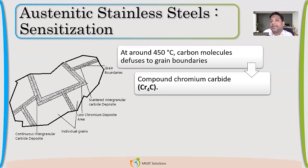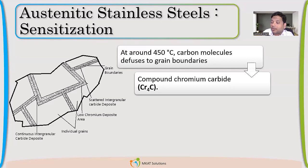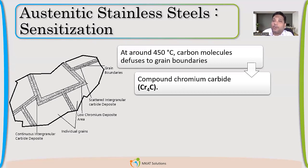One carbon atom will consume four atoms of chromium. We all know that chromium is the reason for stainless steel to be stainless. So if my chromium is getting consumed, my steel is getting depleted of the chromium element.